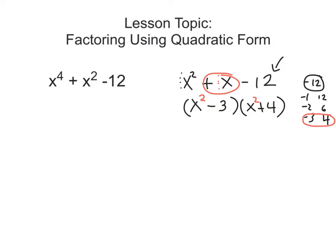So that means we have our answer. The factoring of x to the 4th plus x squared minus 12 is x squared minus 3 times x squared plus 4.